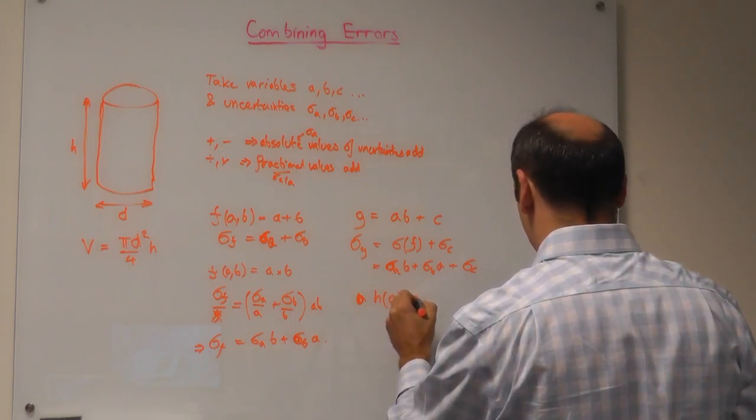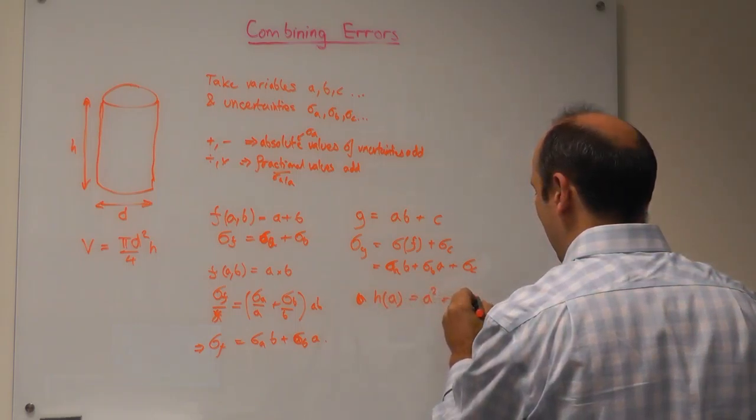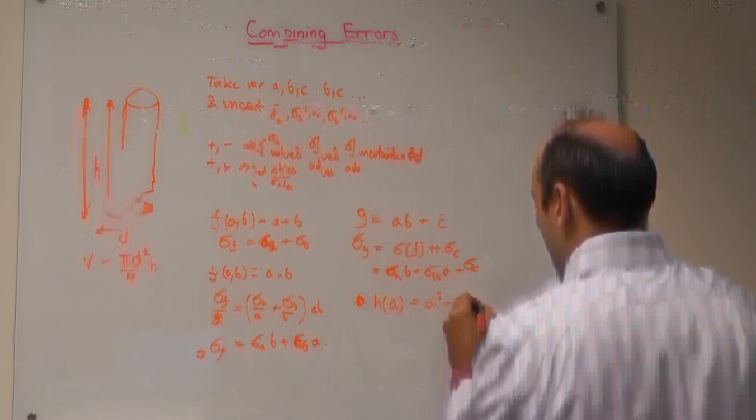What if I have a function h equal to a squared? Well, that's equal to a times a. So the uncertainty in h, by substituting b equals a into my equation for f equals a times b, gives sigma a times a plus sigma a times a, which is twice sigma a times a. That looks a bit like differentiation — when I differentiate a squared I get 2a times the differential. So it is just like differentiation, which is what we'll find out later in the lecture course.